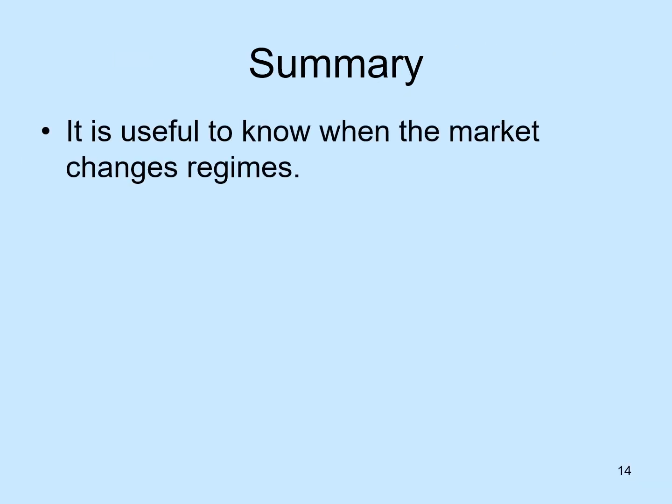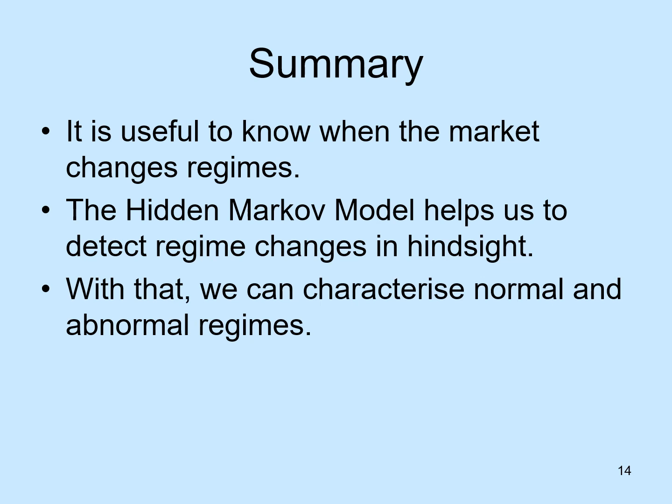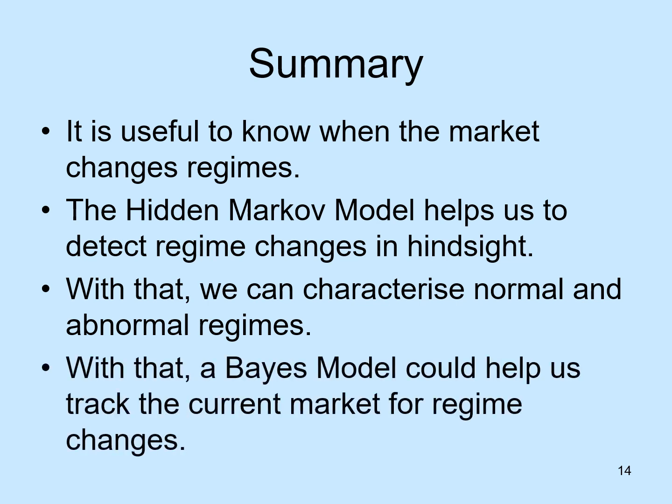To summarize, it is useful to know when the market changes regimes, especially when it goes into an abnormal regime — the sooner we find out, the better. This motivates our research. We have proposed a method to detect regime changes in hindsight, and with this method we can characterize normal and abnormal regimes in the DC indicator space, allowing us to check regime changes dynamically. As a proof of concept, we have shown how this can be done with a naive Bayes model. The most important point is that regime change checking is possible with market information currently available. And that's all for today.